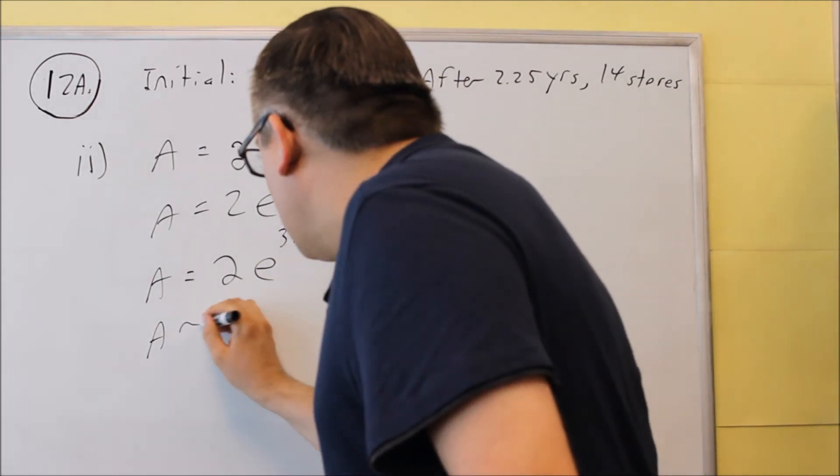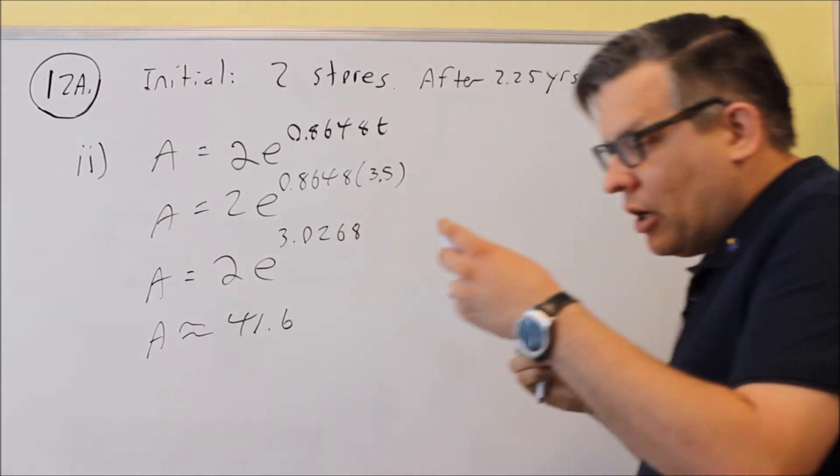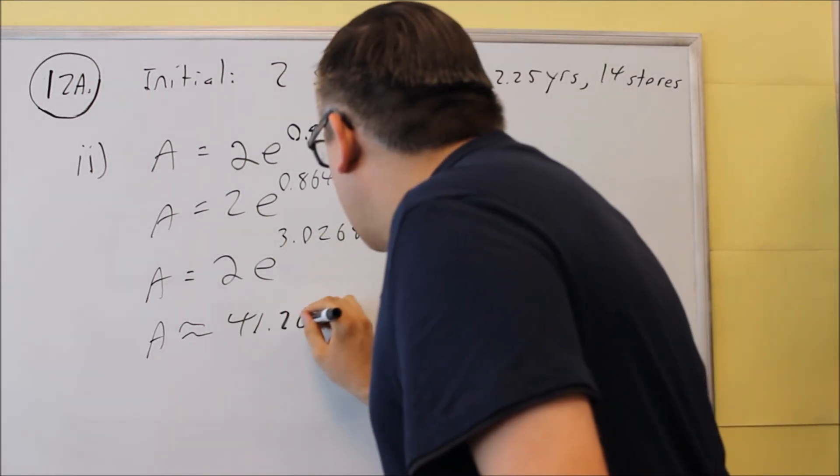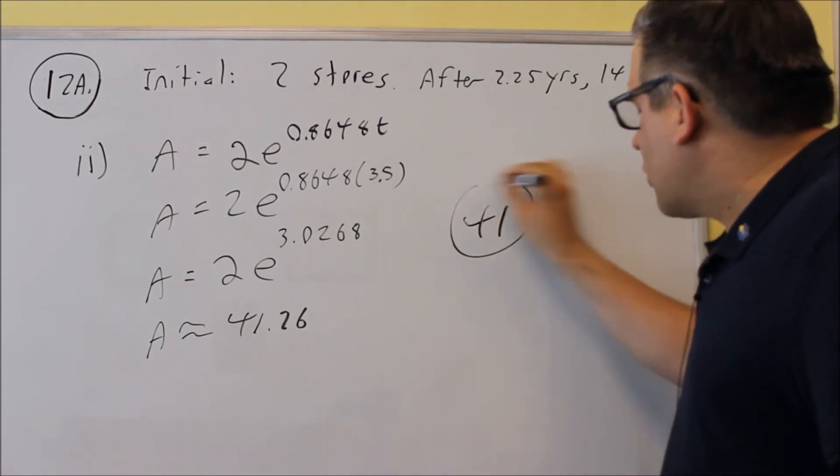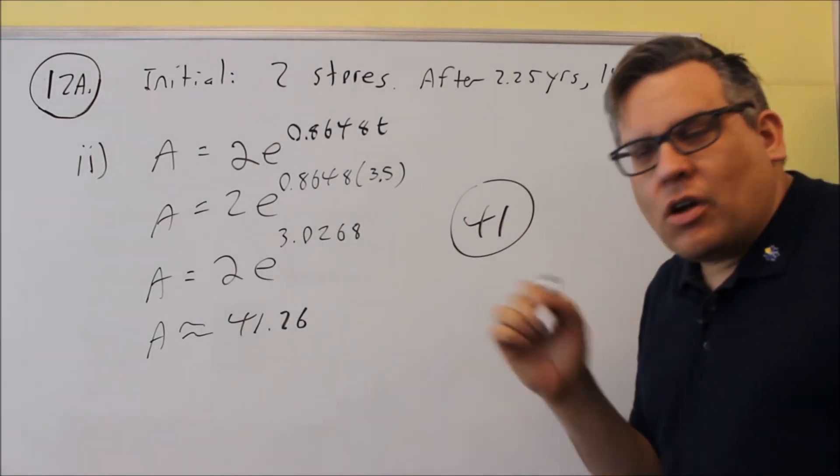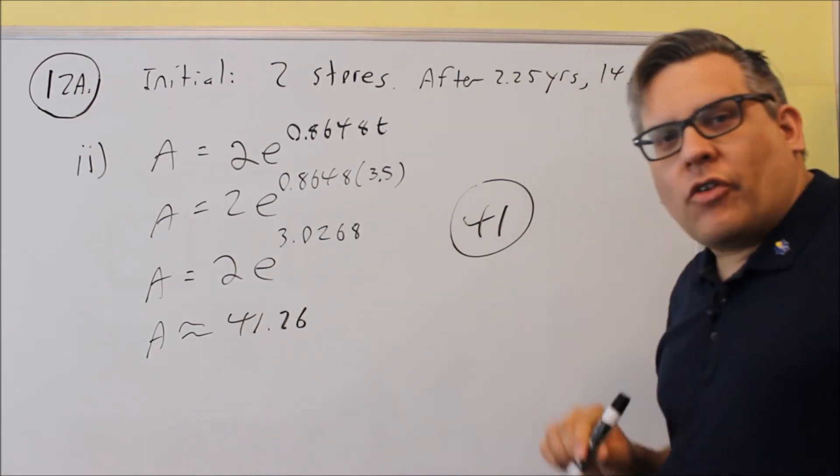So when you do that, you get about 41.6 when you put that in. And so when you round it, because it says round to the nearest whole number, we're just going to put 41 stores in for double I, so that would be our answer for problem 12.